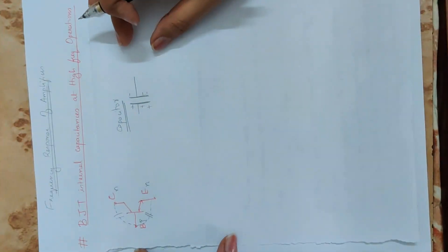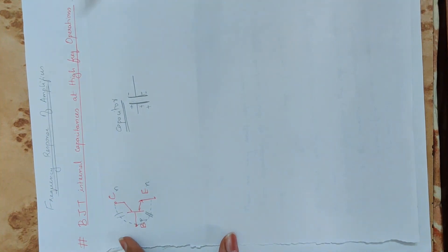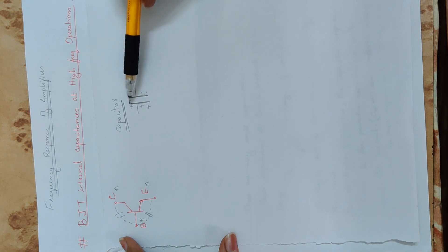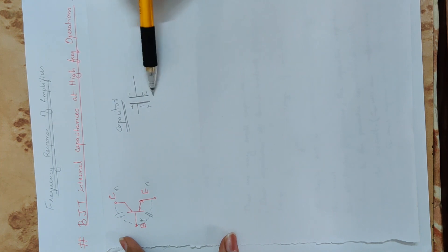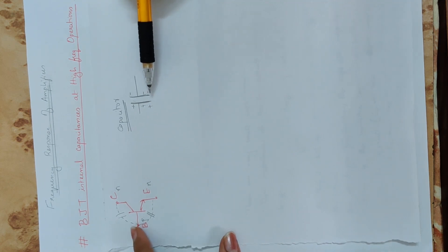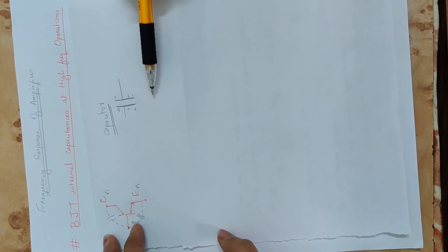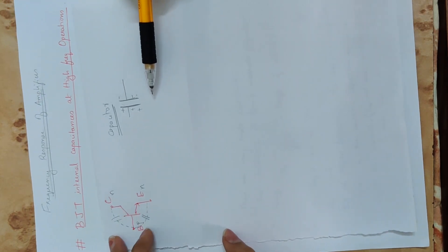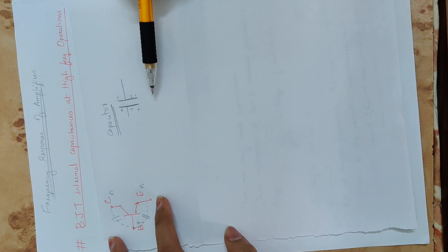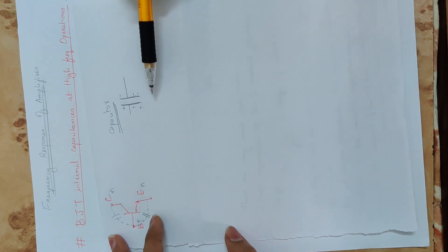This is the basic capacitor principle: two metal plates, one with positive charge and one with negative charge. Applying this concept, across the base-collector junction, a capacitance forms, and across the base-emitter junction, another capacitance forms.